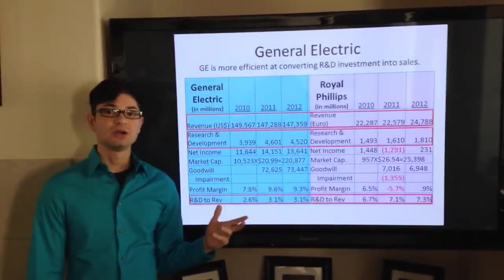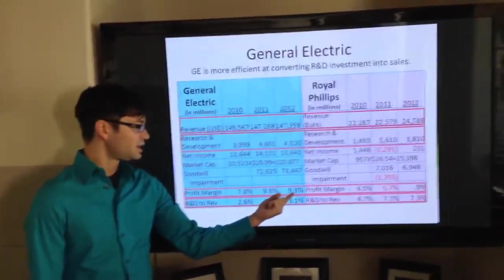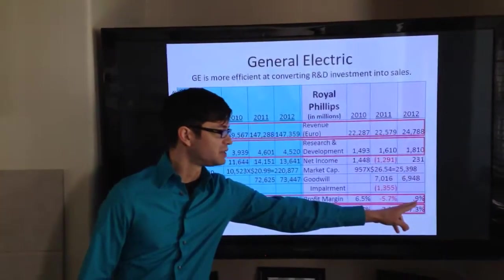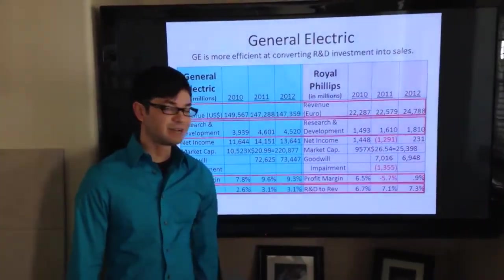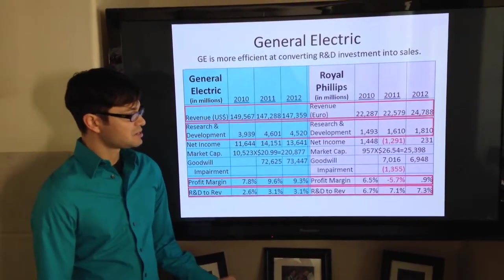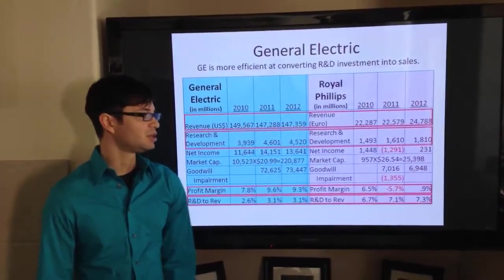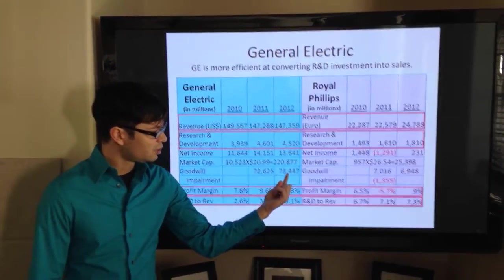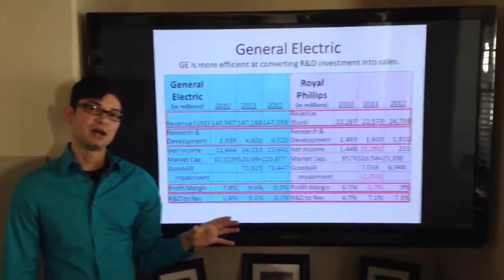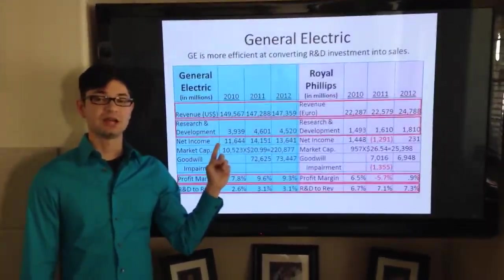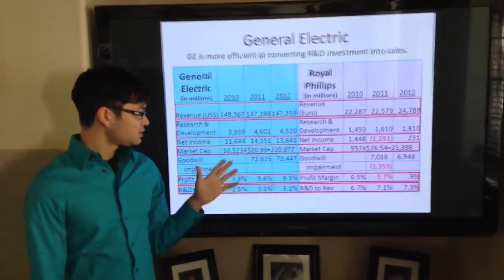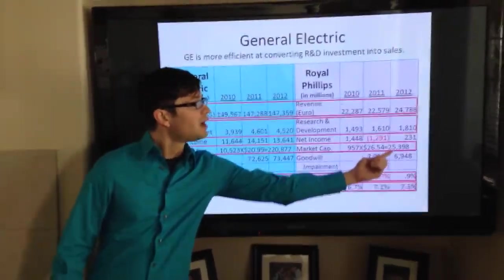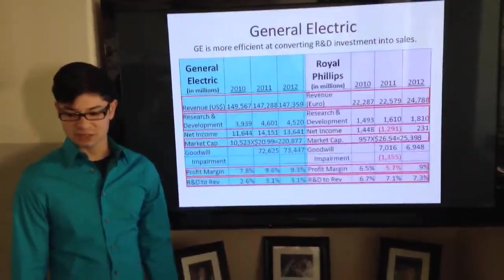Also, General Electric is much more efficient at creating a profit. It is at 9.3% of every dollar that it sells, it generates a profit compared to Royal Philips which is only at 0.9%. And they actually had a negative 5.7% decrease in 2011 mostly due to impairment loss through Goodwill. You can also see that Goodwill is actually almost 10 times as much and that's probably due to the large subsidiary portfolio that General Electric has. Those factors actually led to a market capitalization of $220 million for General Electric compared to $25 million for Royal Philips, almost a 10 times bigger company than its competitive.